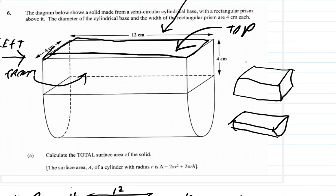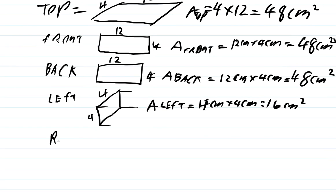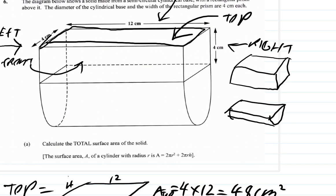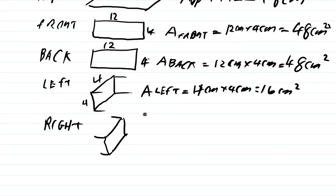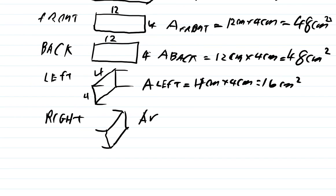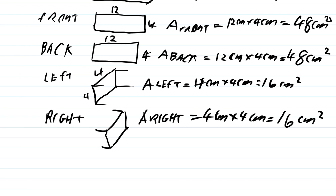Looking the other way, you have the right side. The right hand side looks something like this. You can see the dimensions of the right hand side are 4 high by 4 wide — it's 4 by 4 again, just like the left. So the area of the right side is 4 cm × 4 cm = 16 cm².